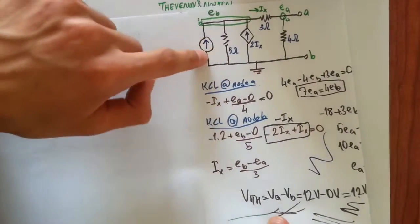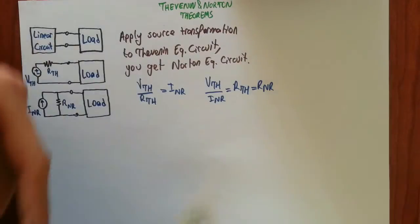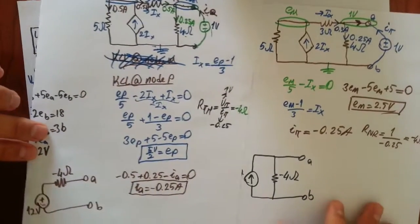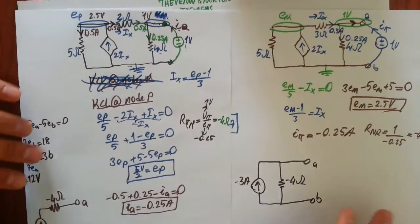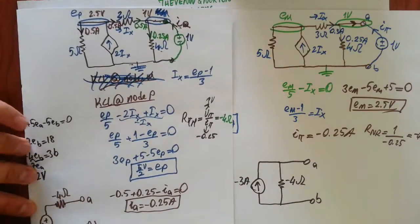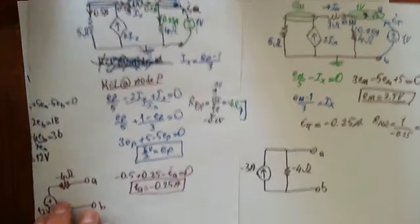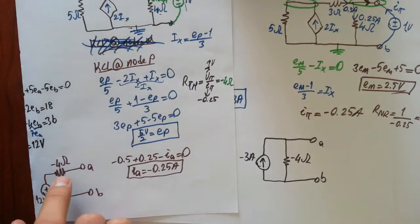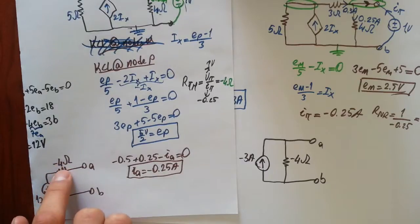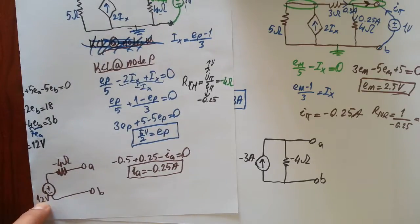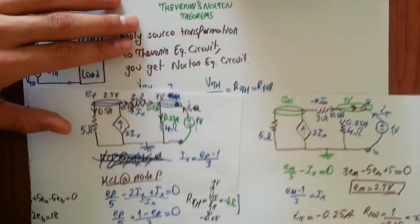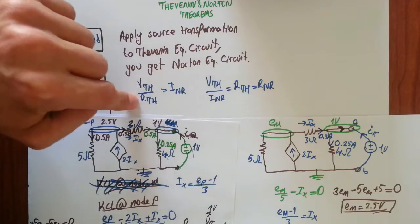Remember this circuit — we have found the Thevenin equivalent and Norton equivalent of that circuit. Here, the Thevenin voltage is 12 volts and the Thevenin resistance is minus 4 ohms. If you divide 12 by minus 4, you get minus 3 amps. And that shows our formula is true.